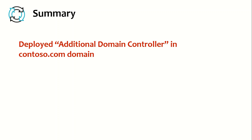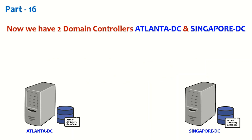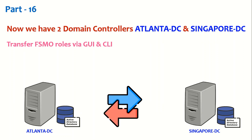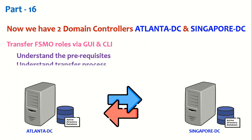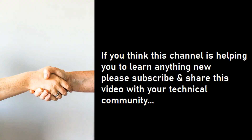To summarize today's session: we deployed an additional domain controller in the contoso.com domain. This was the end of part 15. In part 16, we are going to transfer FSMO roles using both the graphical user interface and the command line interface — transferring FSMO roles from Atlanta DC to Singapore DC and back. We'll cover prerequisites, understand the transfer process, and then perform the transfers. Thanks for joining — if this channel is helping you learn, please subscribe and share with your technical community. Have a great day.